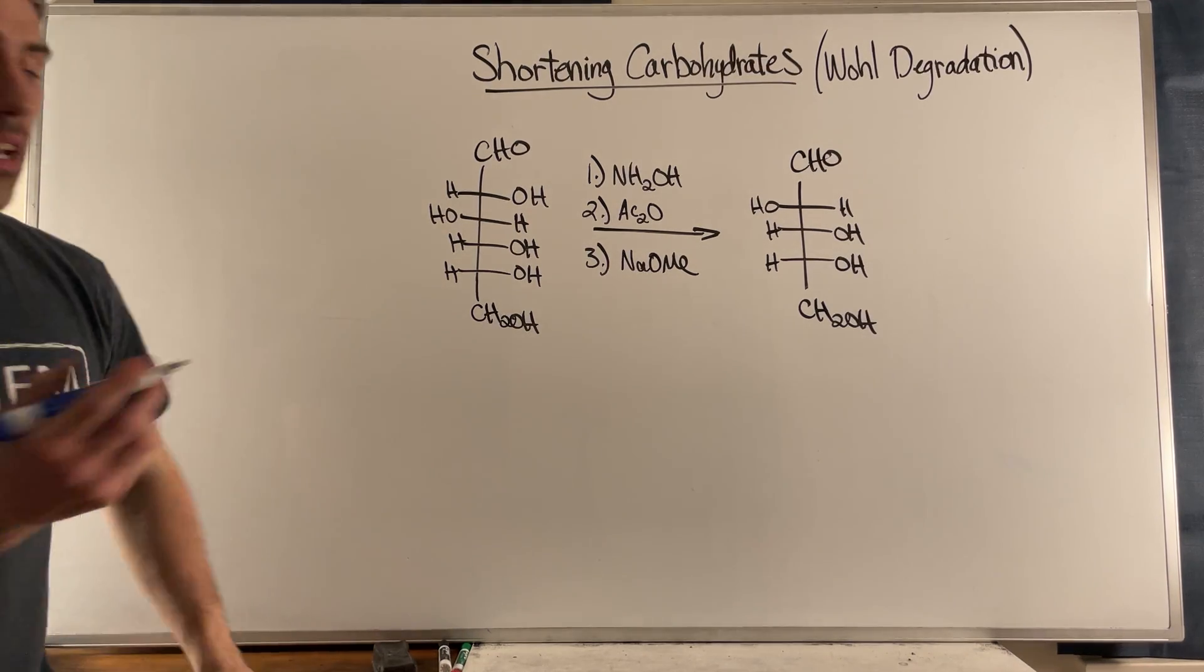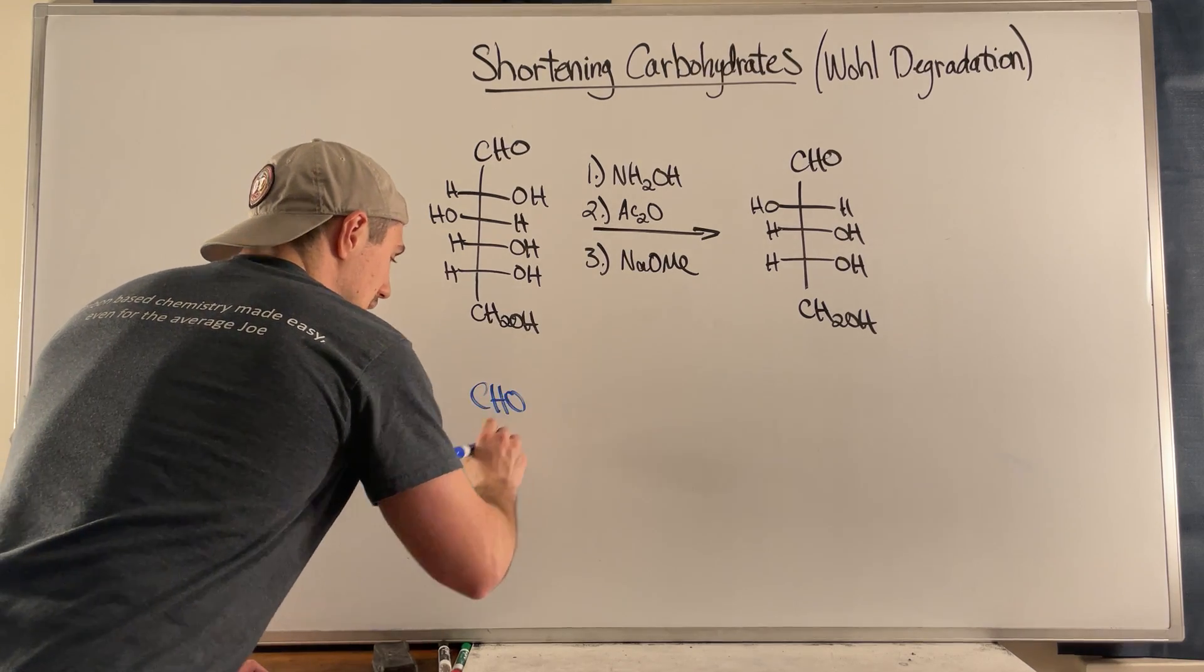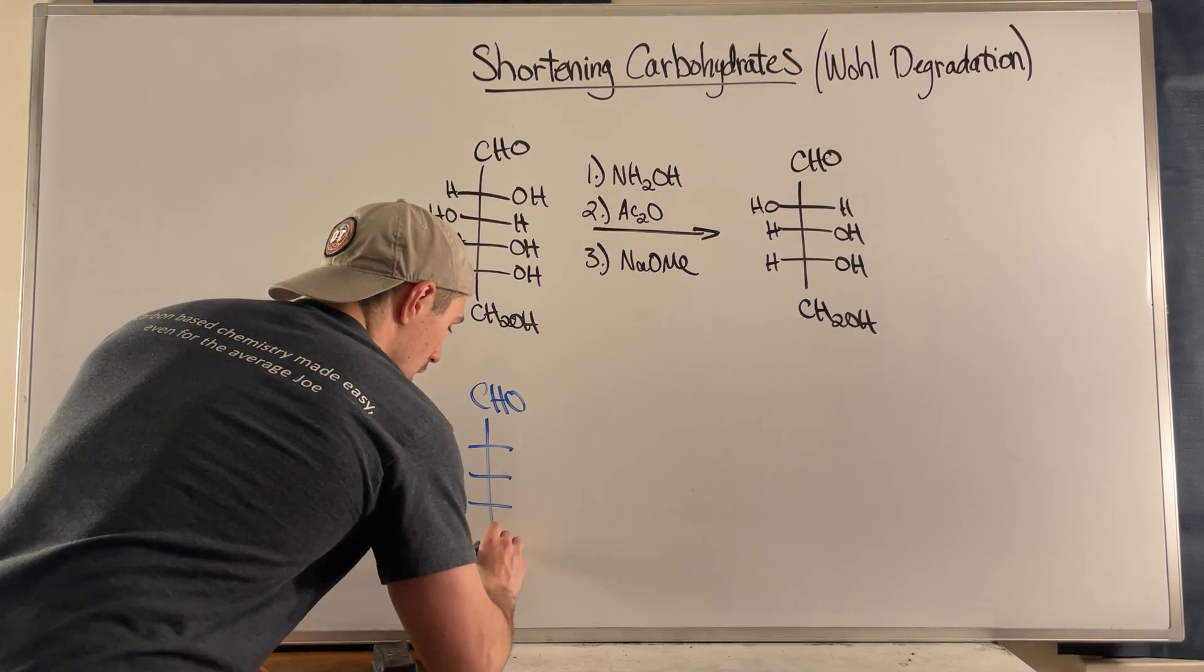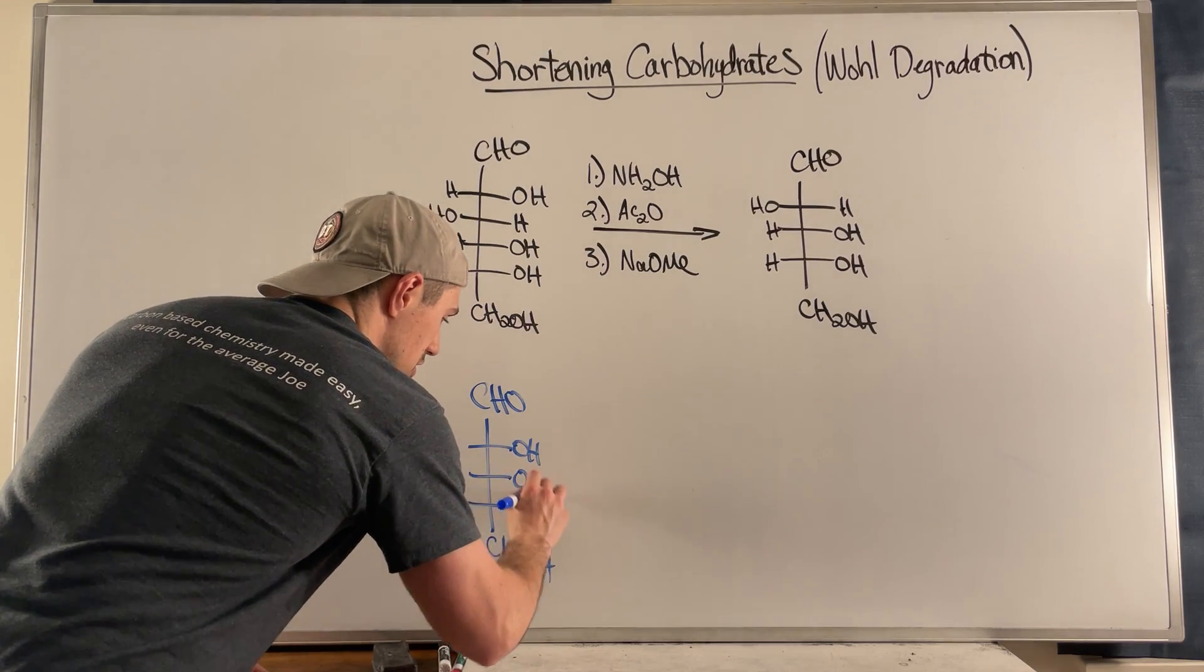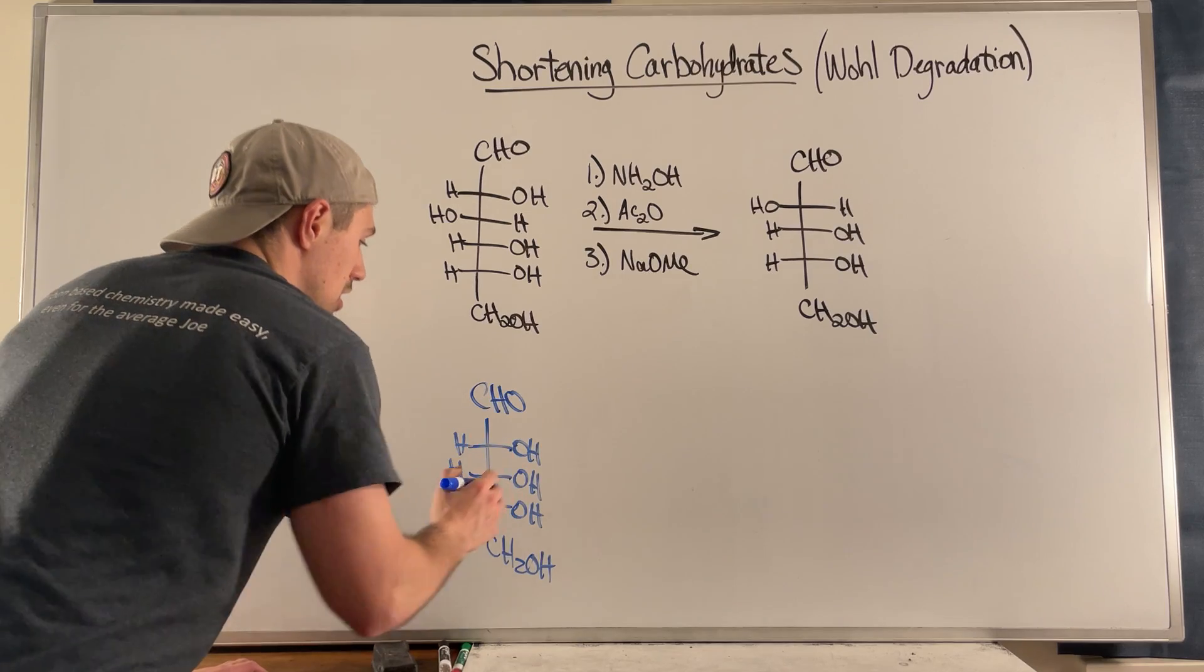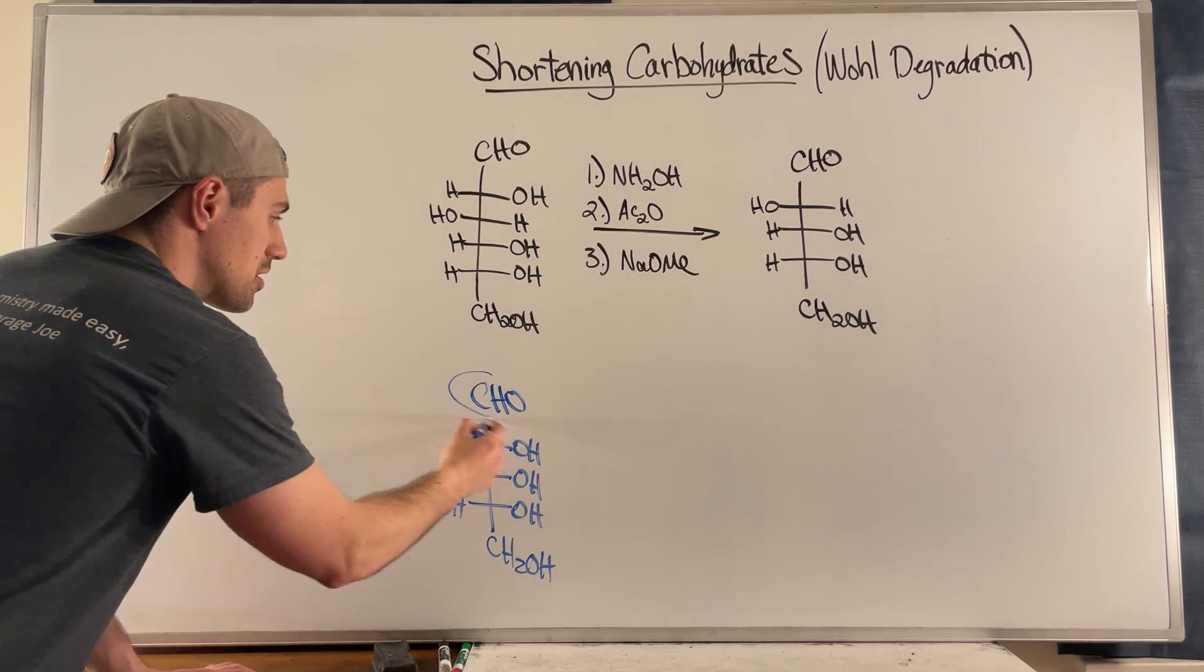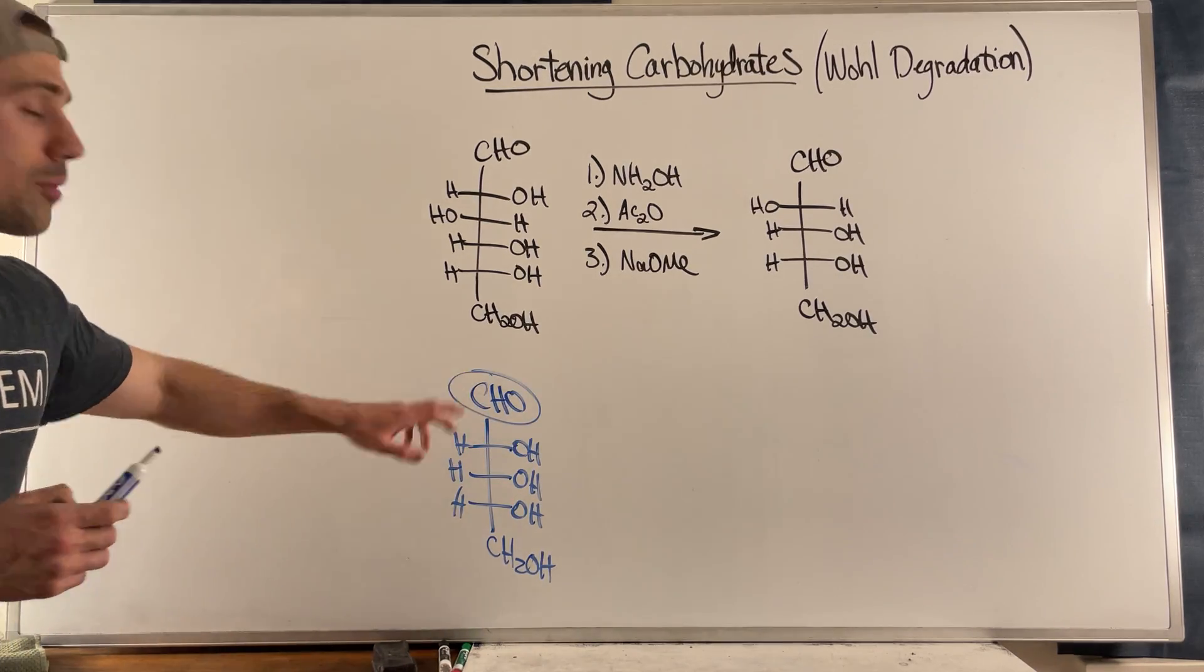But one thing I will highlight is, you saw that when we lengthen the chain—I'm just going to come up with a pentose real quick—we saw that this center, this carbon which was achiral, not a stereocenter, was sp2 and became through cyanohydrin formation and then subsequent reduction